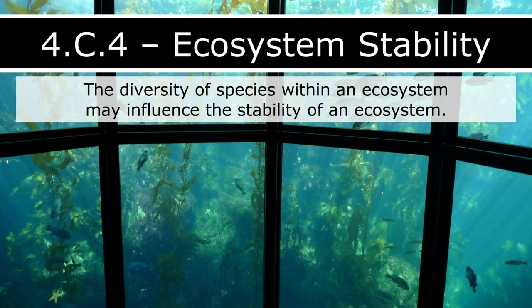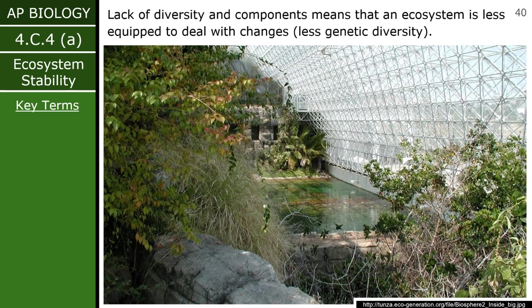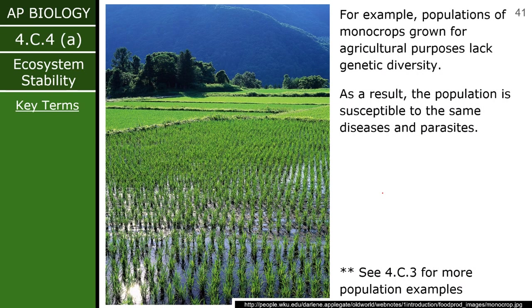As a general rule of thumb, if an ecosystem has high diversity, then it will be more stable. If there are lots of different species around, it's a more stable system. If you have fewer parts — only three species, for instance — you're going to be less resilient. Populations of monocrops generally lack genetic diversity because they either came from similar lineages or are the same species. If something comes along that can target that species — a disease, parasite, or predator — it can entirely wipe out the ecosystem, because that ecosystem consists of pretty much one species.